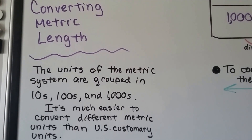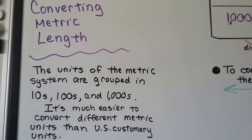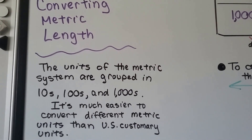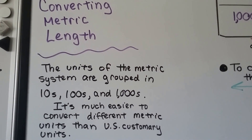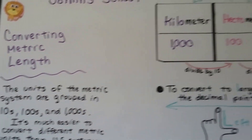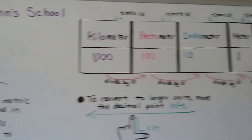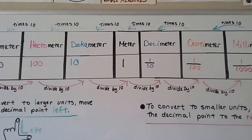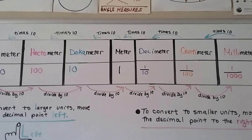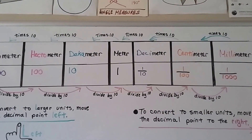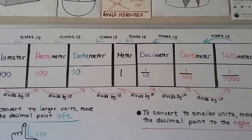U.S. customary units have weird numbers like 8, 16, 32, and 64 ounces and stuff like that, and 12 for a foot. This metric system is so much easier. It's all based on ones, tens, hundreds, and thousands.